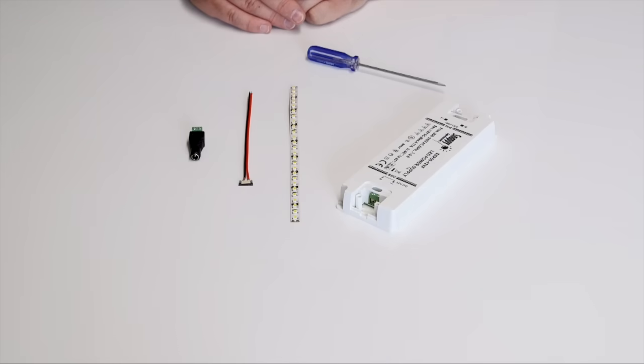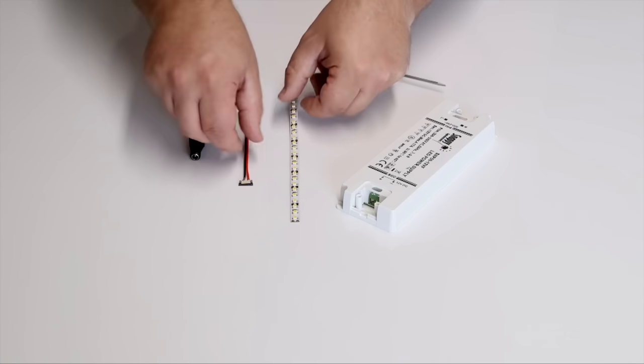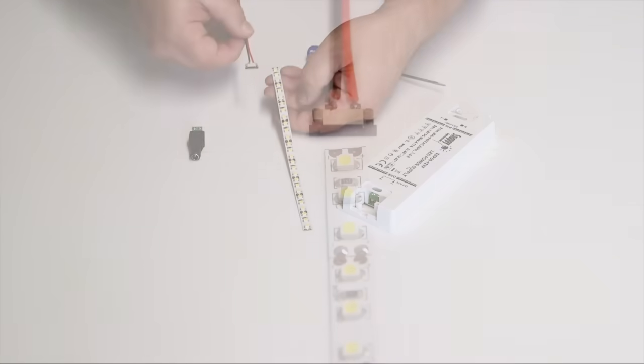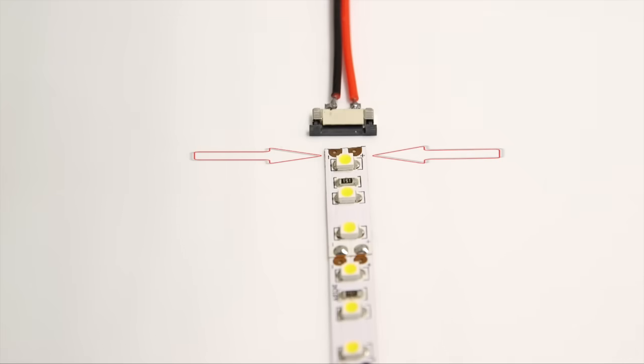To use these connectors, offer the connector up to the LED strip and ensure that the red wire is aligned with the plus mark on the strip and that the black wire is aligned with the negative mark on the strip.